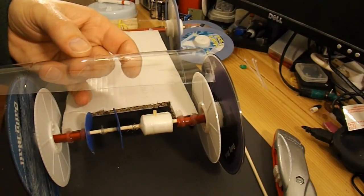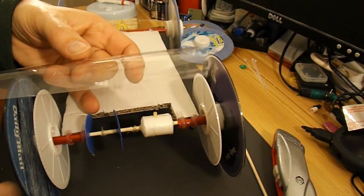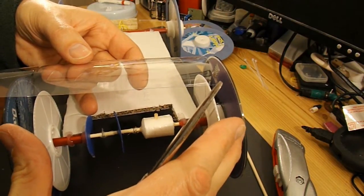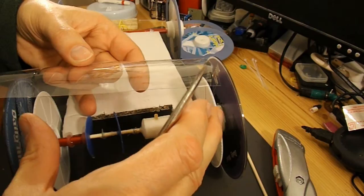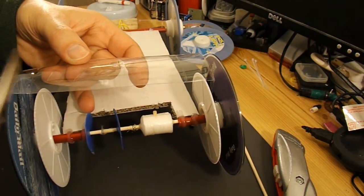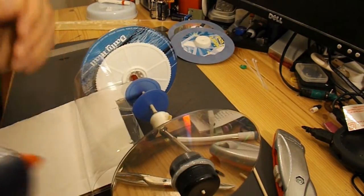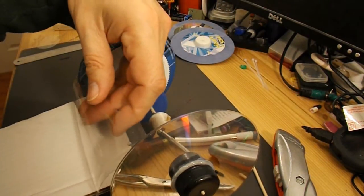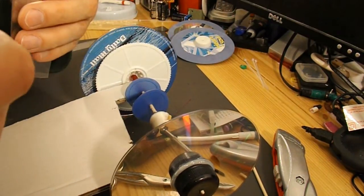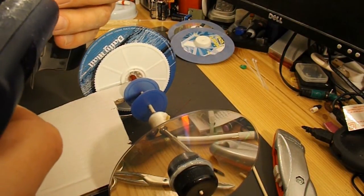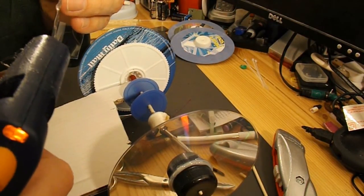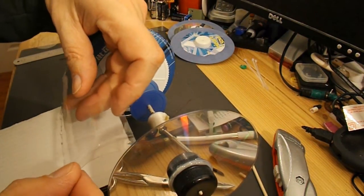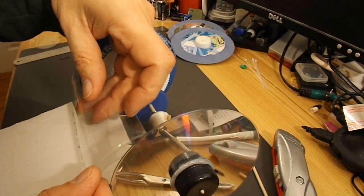Now we need to trim this piece of plastic, so it's shorter than the outside wheels, but long enough to actually go over these inner wheels. Glue gun ready. Just a thin amount just to get the position right, and then we can add some more.